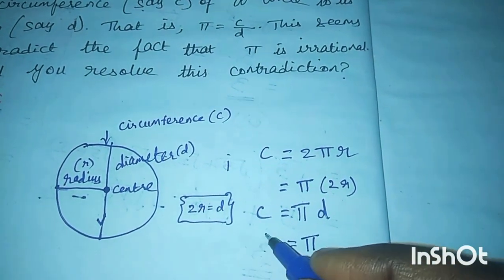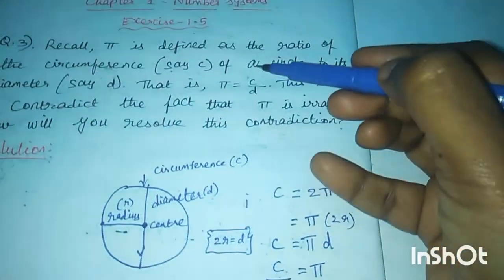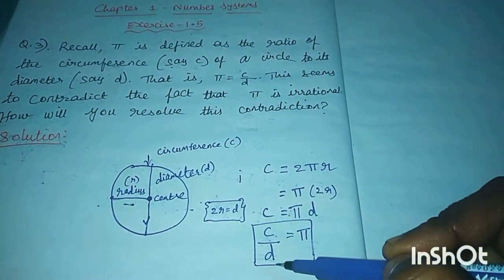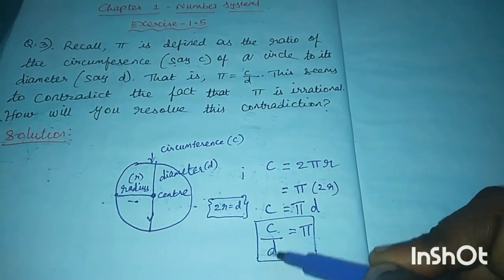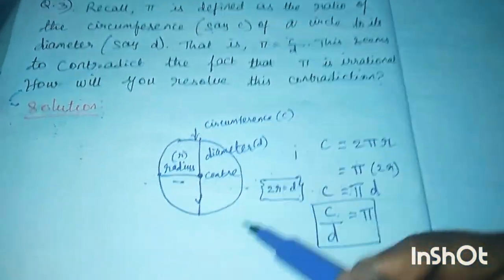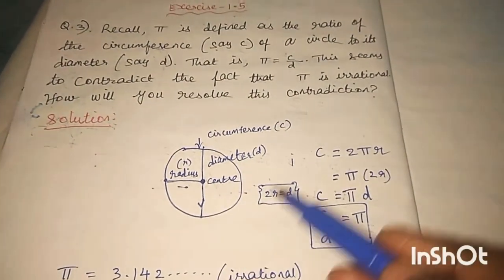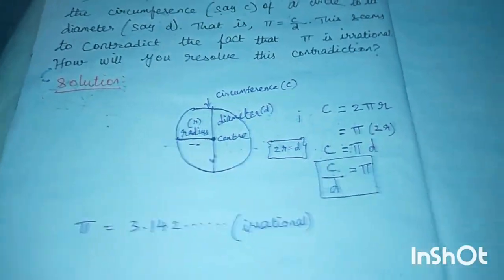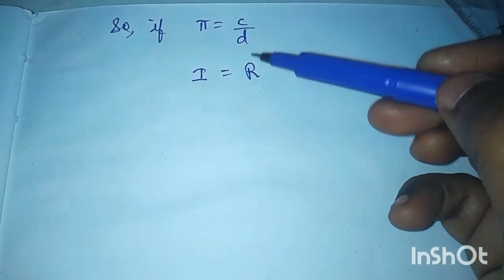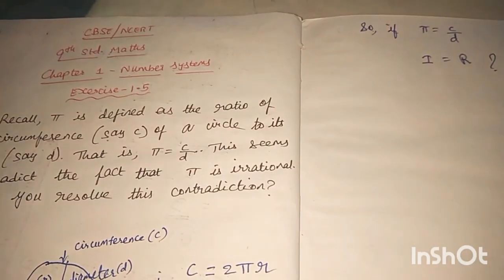So pi is defined as the ratio of circumference of the circle to its diameter: π = C/d. We already know pi is irrational — 3.142..., non-terminating, non-repeating. But C divided by D looks like the p by q formula, which is rational. So if pi equals C by D, that means irrational equals rational — and that's the contradiction.